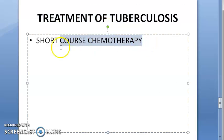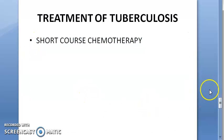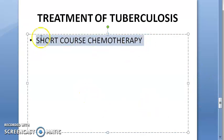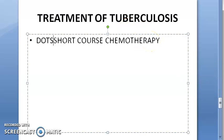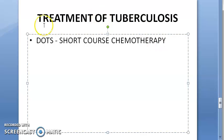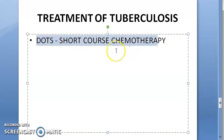Next we will cover short course chemotherapy — a very important exam topic that should be read from the latest textbook. This is also known as DOTS: Directly Observed Treatment Short Course chemotherapy, which falls under RNTCP.